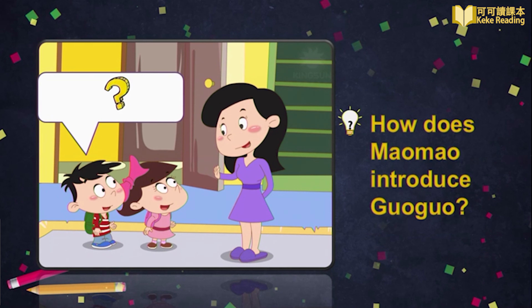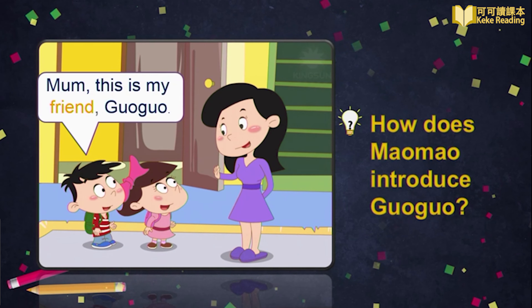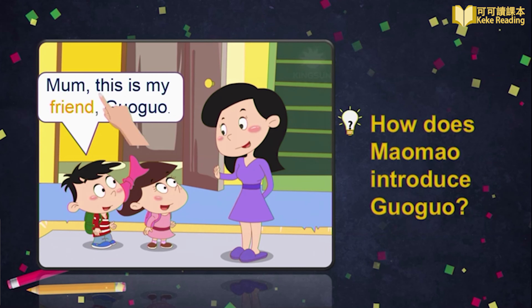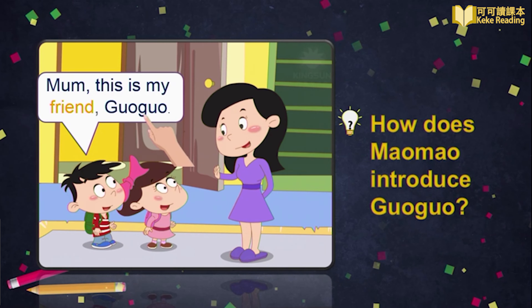How does Mau Mau introduce Guo Guo? 猛猛是如何介绍Guo Guo的呢? Yes, Mau Mau says: Mom, this is my friend, Guo Guo. Are you right? Let's follow Mau Mau to read: Mom, this is my friend, Guo Guo.